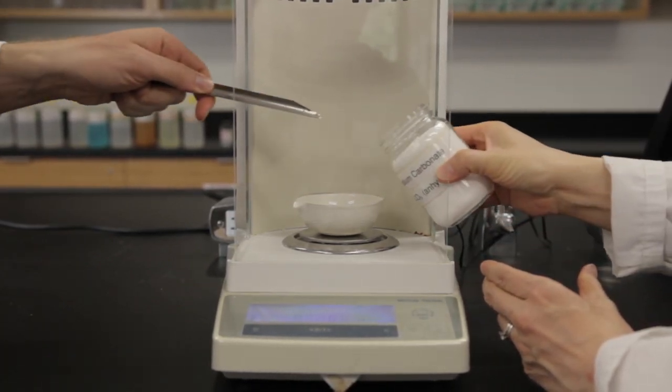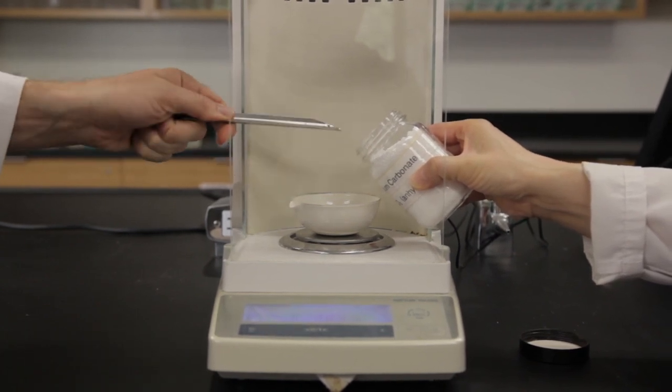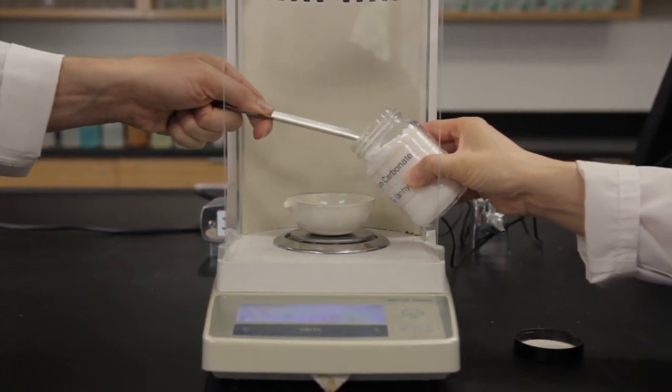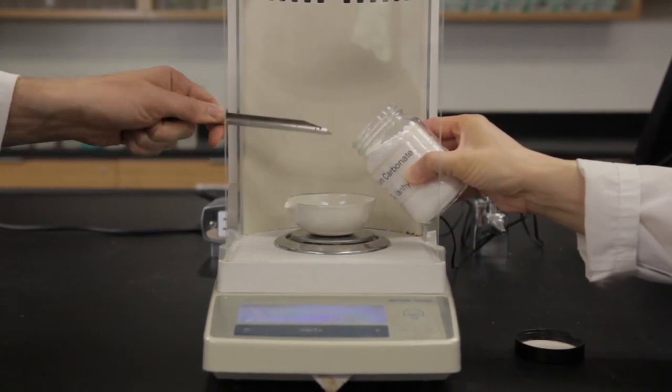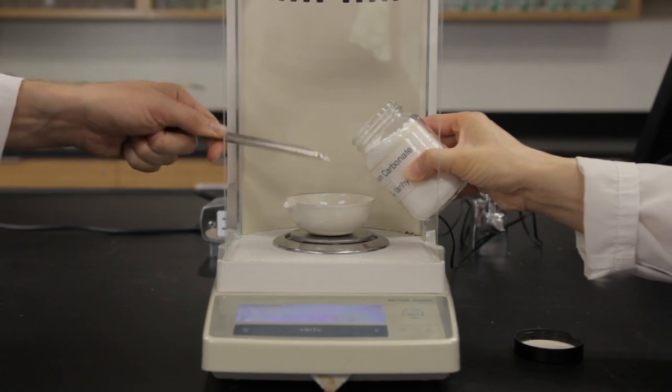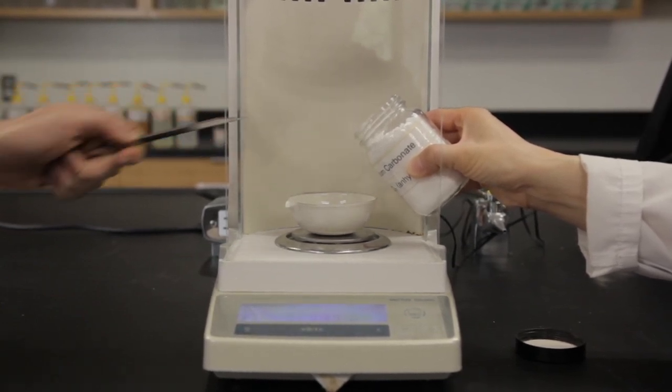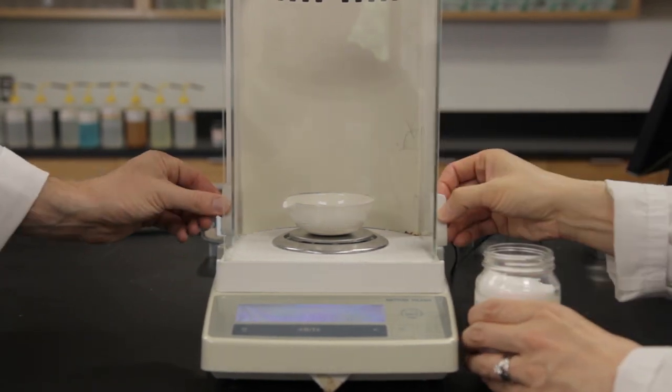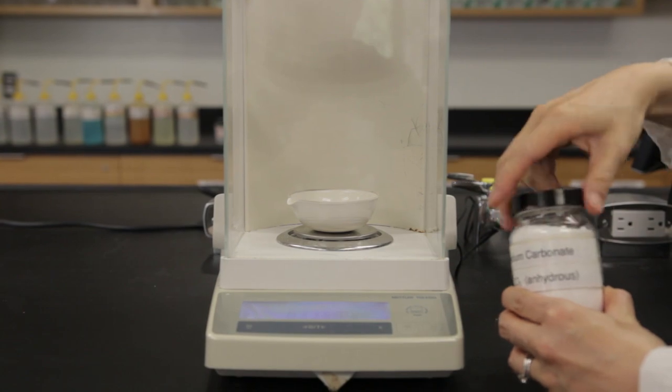Tare the evaporating dish and weigh approximately 0.3 grams of sodium carbonate. Record the exact mass, making sure to record every single digit shown on the balance.